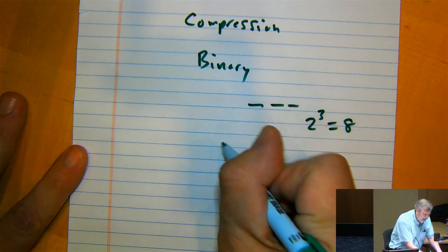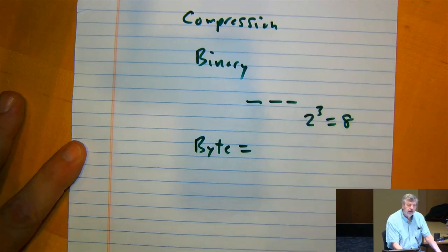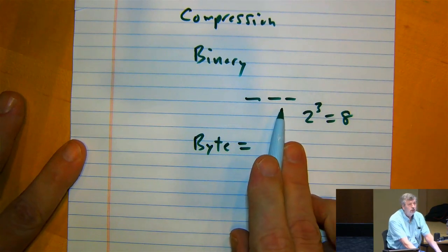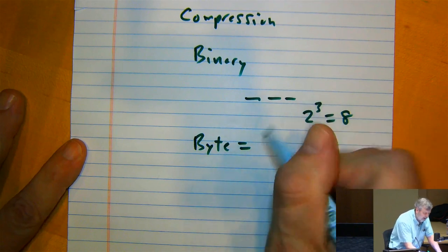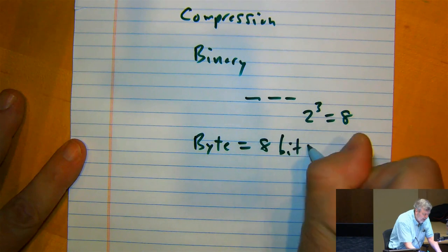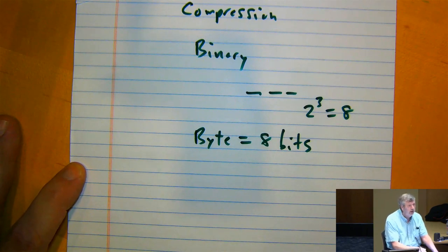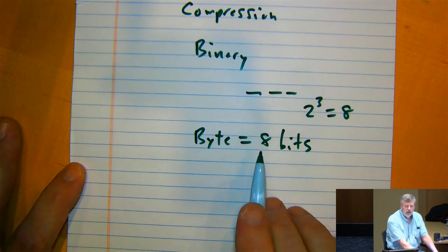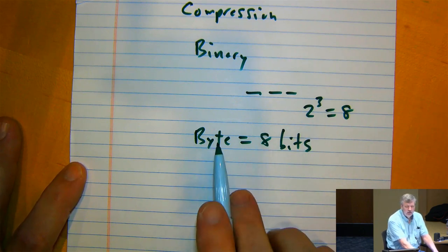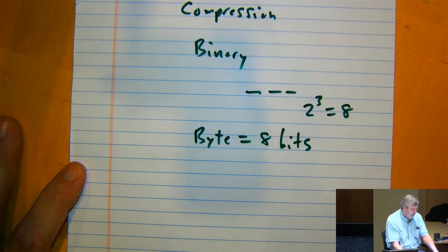Most of you are familiar with the notion of a byte. Once we started dealing with binary representations of things, we decided we didn't want things with just three bits available. A byte is eight bits. If you're going to be storing something in a computer's memory or on an external device, we want the bits in multiples of eight — so you could have one byte, two bytes, three bytes, and so forth.